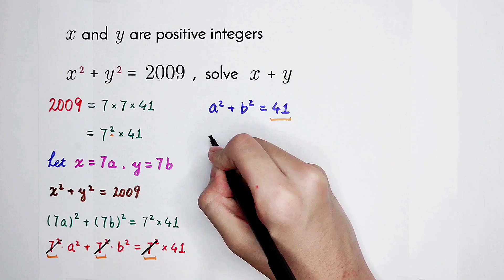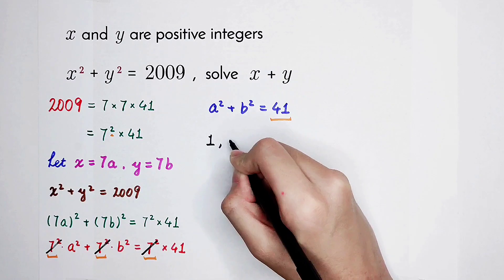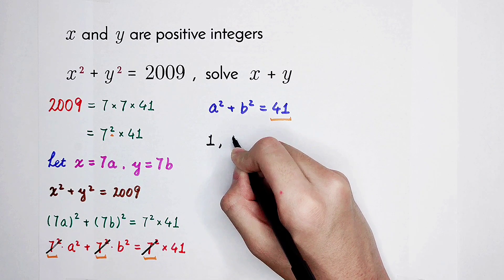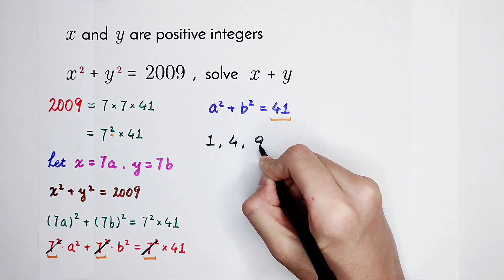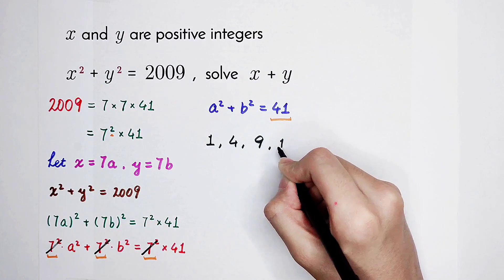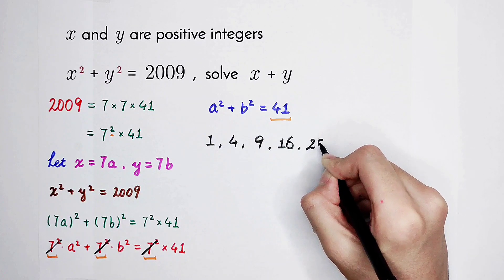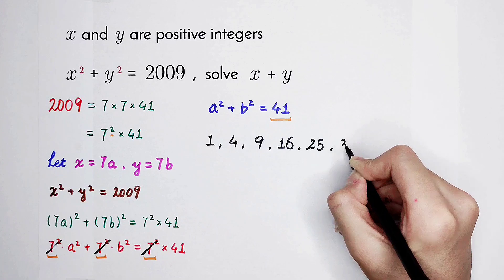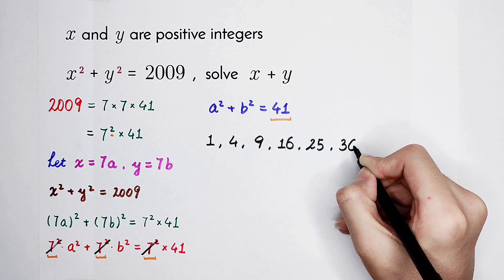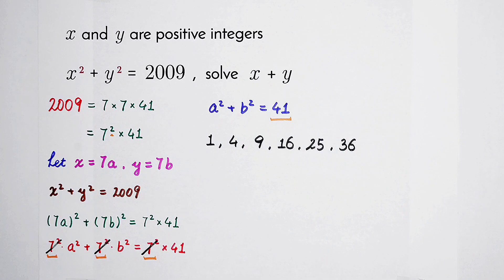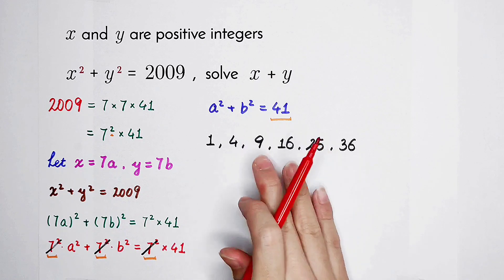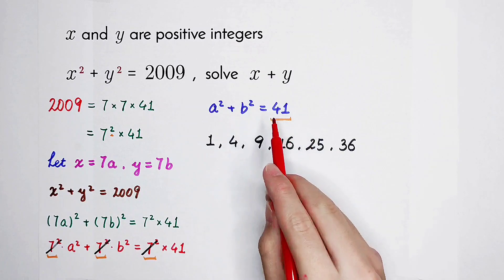The first one is 1. Of course it is. The second one is 2 squared is 4. The third one is 3 squared is 9. And then 4 squared is 16. 5 squared is 25. 6 squared is 36. And 7 squared is 49. So these 6 numbers. We should find out 2 numbers from them where their sum is 41.